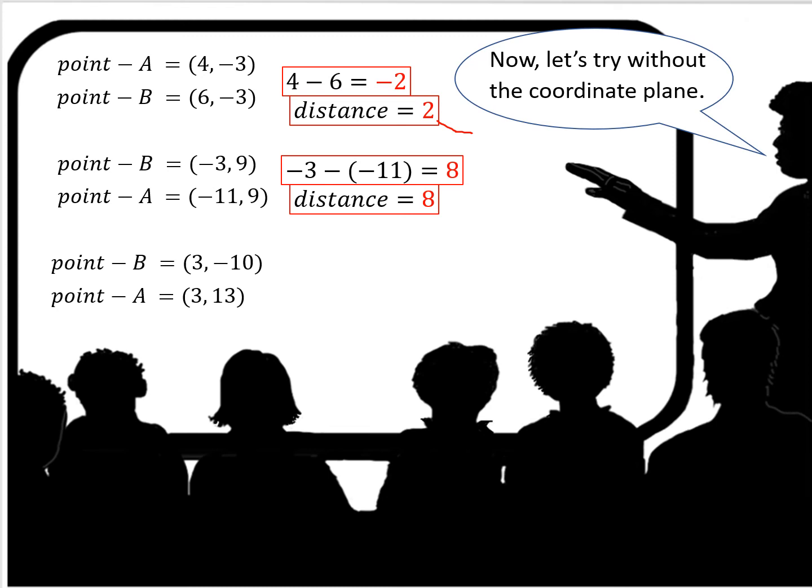Given point B and point A, point B being negative 3, 9, and A is negative 11, 9. What is the same? Well, it's the y-coordinate that's the same. And since the y-coordinate is the same, we're just going to subtract the x-coordinates. Negative 3 minus negative 11 is 8. And the absolute value of 8 is 8.